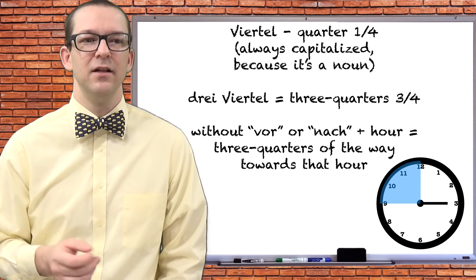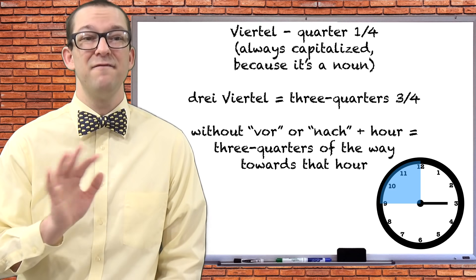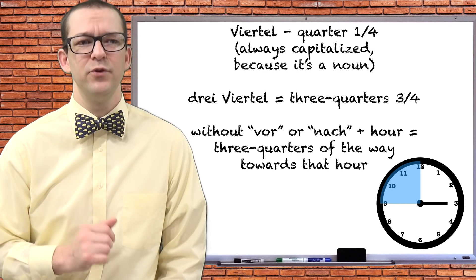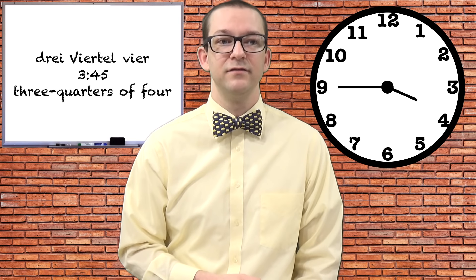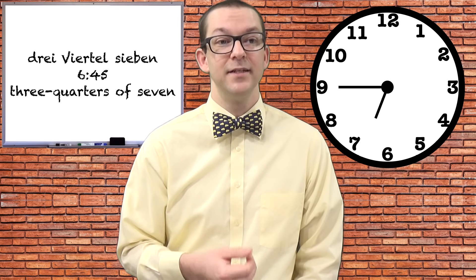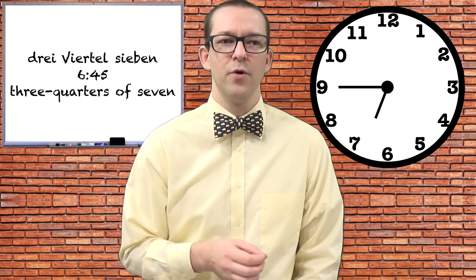You can also use drei viertel, which is three quarters of the way to the next hour. This is by far the most confusing time expression my students encounter. Here are a few examples of that. Drei viertel vier, 3:45, literally three quarters of four. Drei viertel sieben, 6:45, literally three quarters of seven.